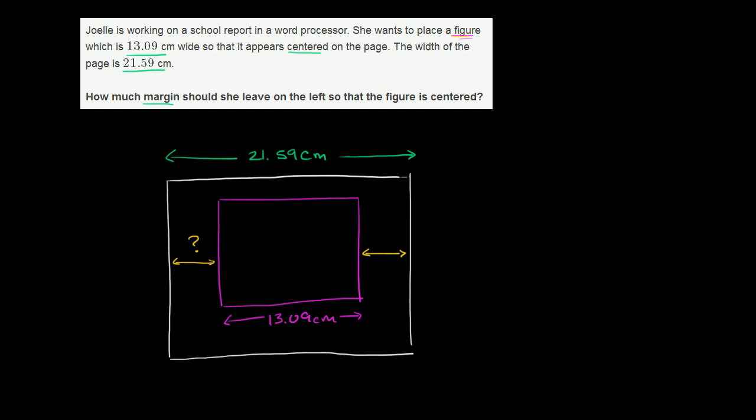And that's just 21.59 centimeters minus 13.09 centimeters. This gives us 8.50 centimeters, which is the combined margins, not just the left or right. The left plus the right margin is 8.50 centimeters. This is this distance plus this distance.